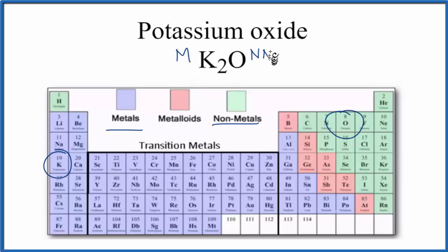So we have a metal and a nonmetal. When we have a metal and a nonmetal, almost always, that's going to be an ionic bond. So the bond between the potassium atoms and the oxygen, that will be ionic.